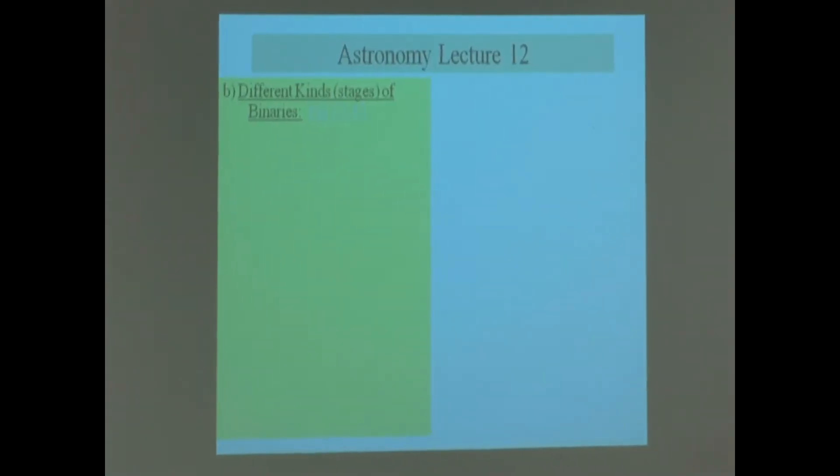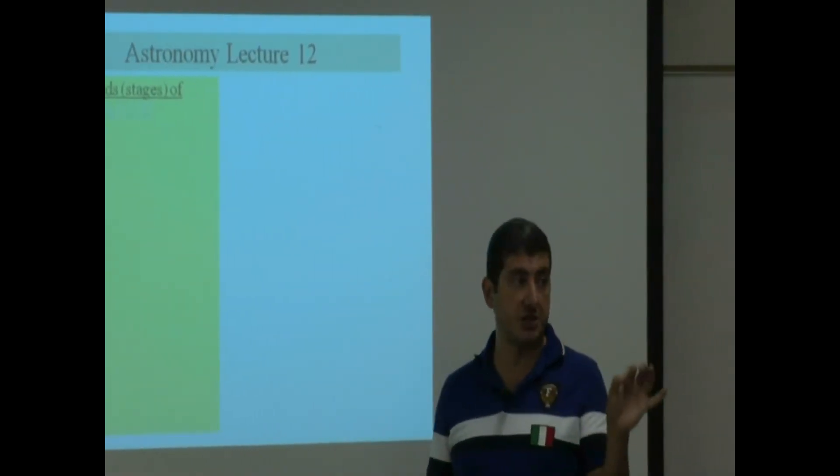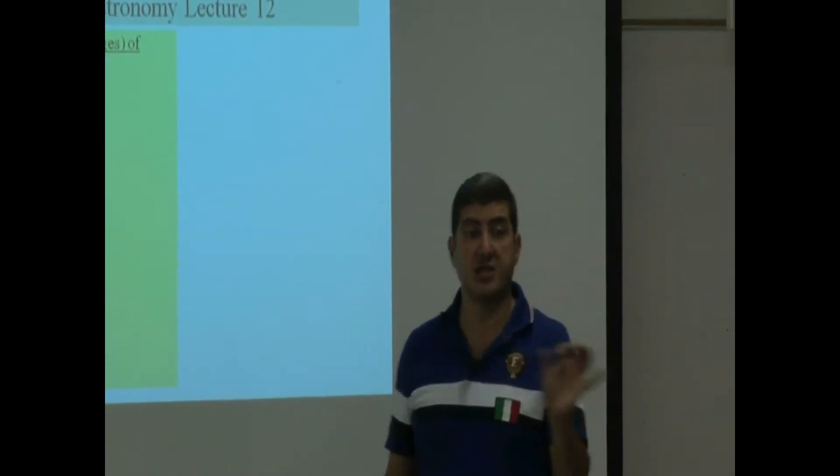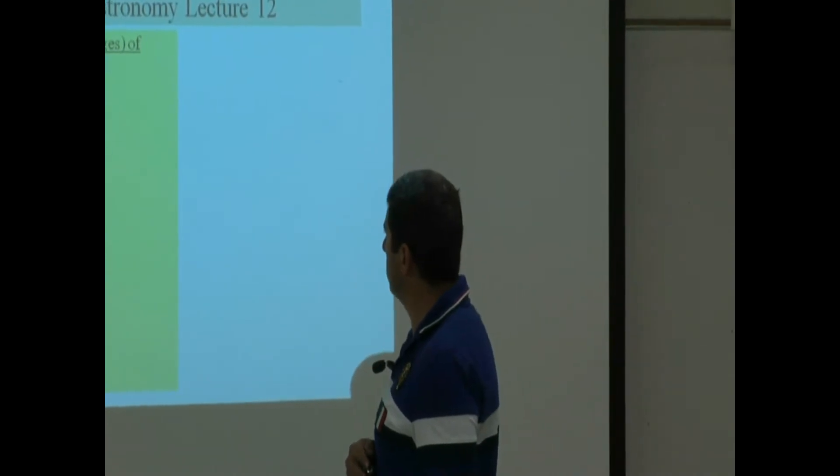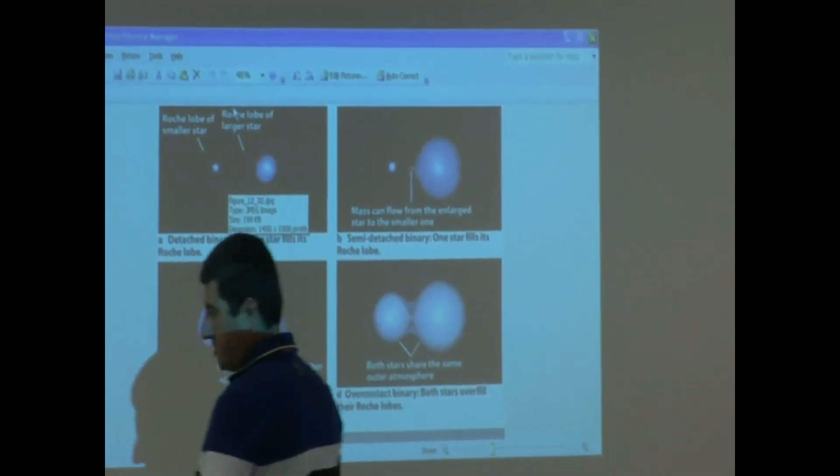Okay, different kinds of binaries, which what I'm talking about is different stages. What kinds of binaries are there that are at the different stages of mass transfer? So we go to here, figure 12-32.